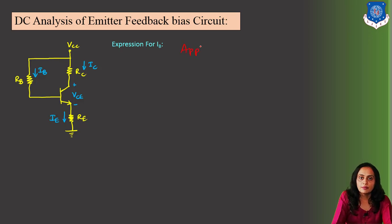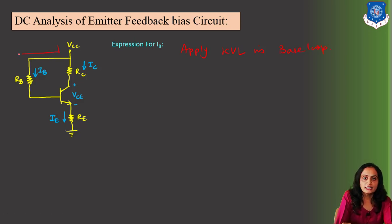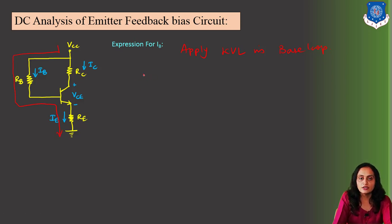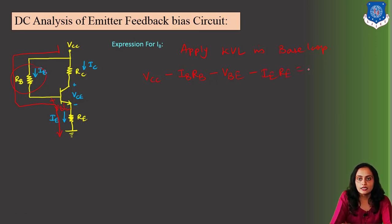To calculate IB, let us apply KVL in the base loop. The base loop goes from VCC through RB through the base-to-emitter junction to ground. Writing the KVL equation: VCC minus IB·RB minus VBE minus IE·RE equals zero.